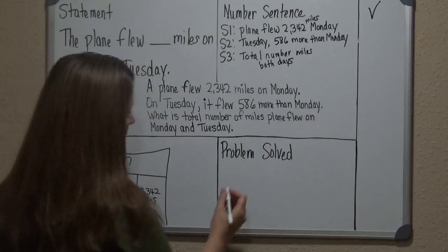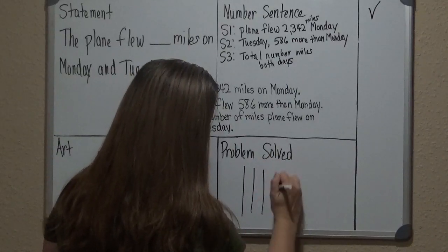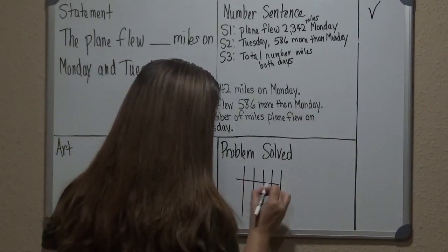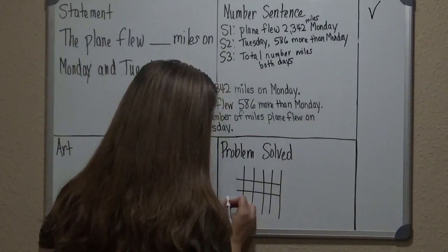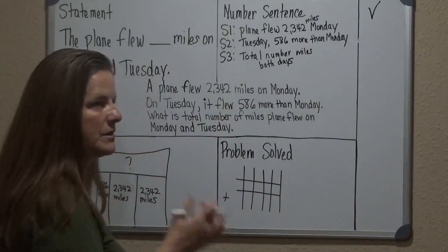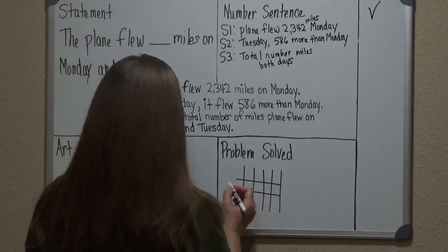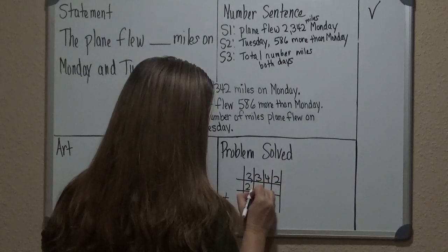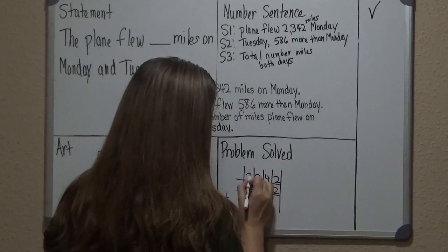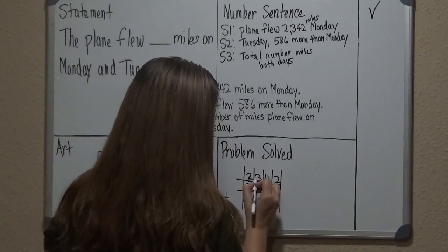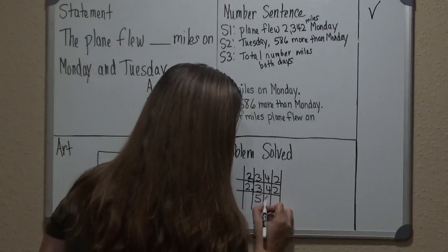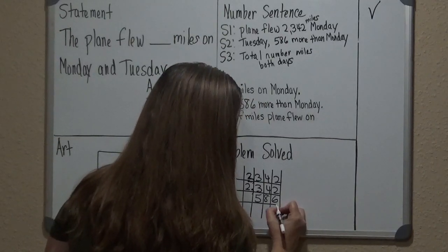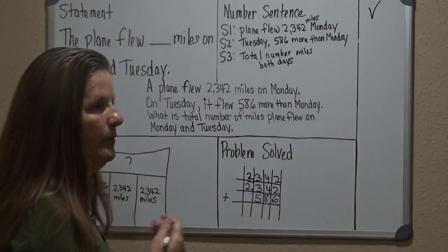Now we get to the Problem solving step. I always tell students to draw lines to separate their numbers into the correct place value columns, because if they don't, sometimes numbers are lined up wrong and computation is off. So we have 2,342 plus 586. When adding, you can start at the largest number in each place value and count up from there.